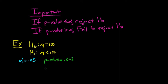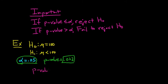So what would be the conclusion in this case? Well, in this case the p-value is less than or equal to alpha — 0.023 is smaller than 0.05 — so we have that the p-value is less than or equal to alpha. So in this case, we would say reject H0.